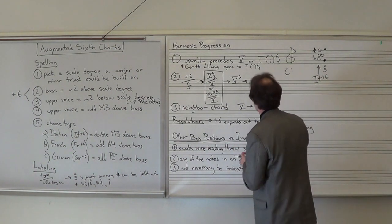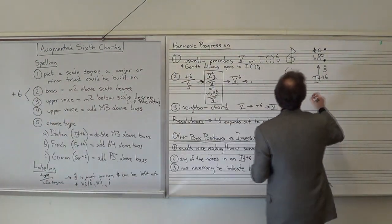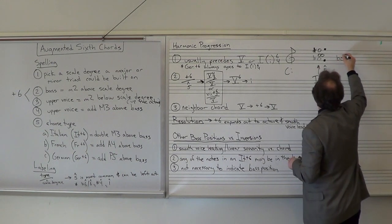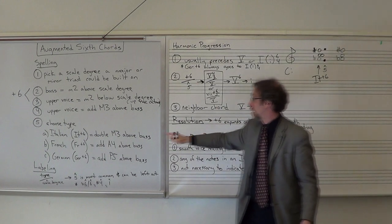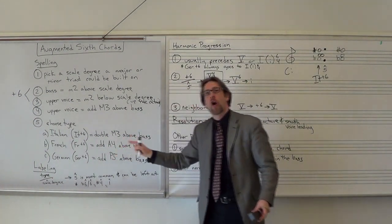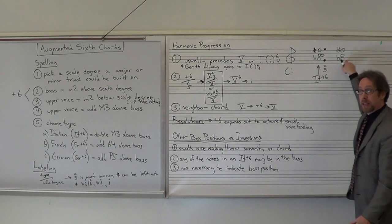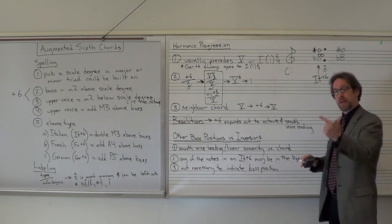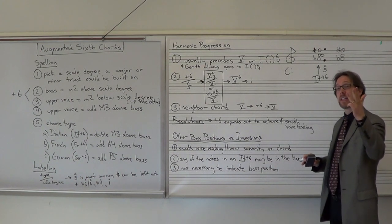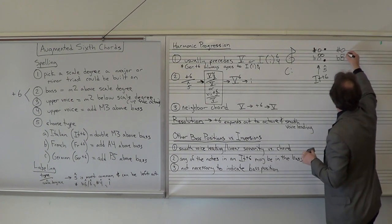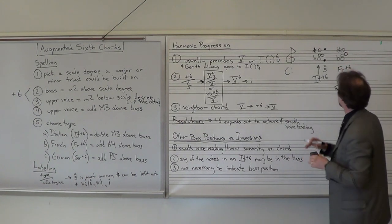That is not the case for the French. For the French, you have your core — A-flat, C, F-sharp — but instead you're adding an augmented fourth above the bass. The bass is A-flat. A-flat to D-flat is the major scale; a half step higher than D-flat would be D-natural. So putting a D-natural in makes this a French augmented sixth chord.